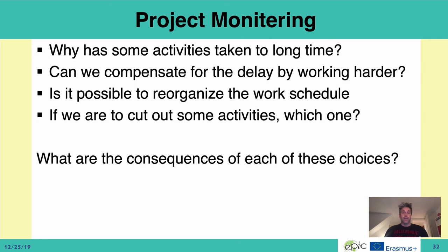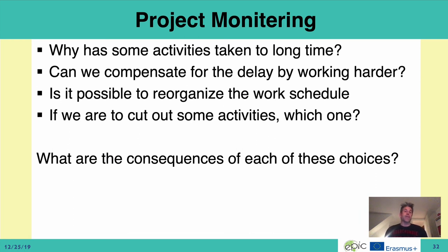There is also the monitoring along the way. Think about why some activities have taken too long — will this also impact us further? Is it something to take into account in the last part of the project? Can we compensate for the delay by working harder, or reorganize the work schedule using buffer time? Or is it necessary to cut out some activities? Instead of standing two weeks before the deadline, as in the Viking model, and realizing you'll never achieve what you wanted, you can plan well ahead to cut out part of the project, reduce the scope, or do something different so that your project still constitutes a whole.